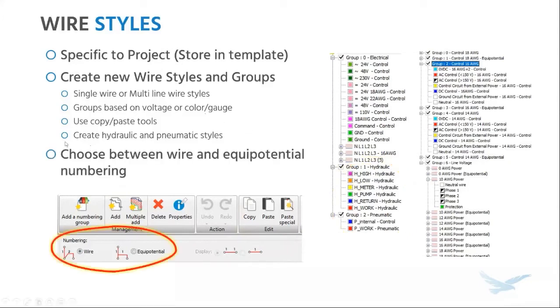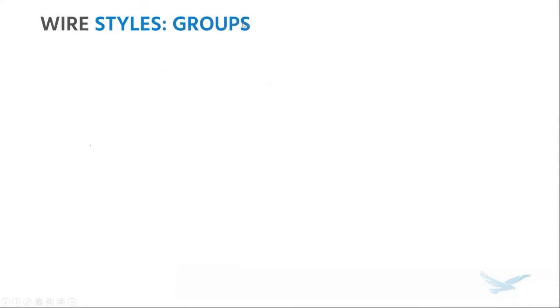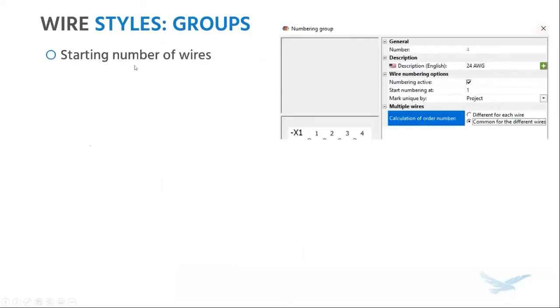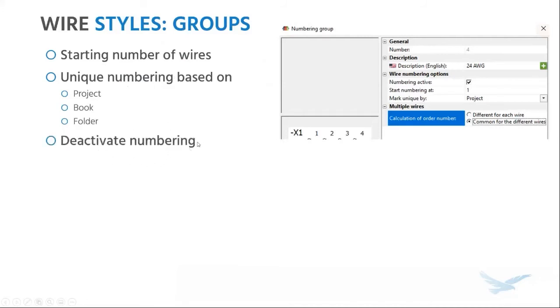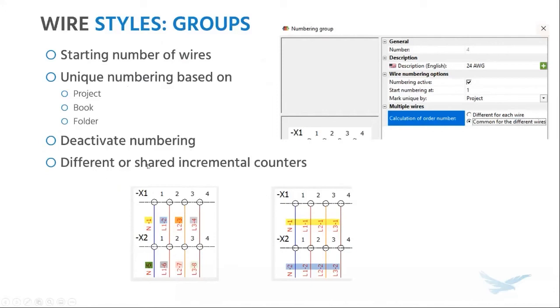You can also choose the scheme of wire numbering that you want — you can either number individual wires or have a number for every voltage potential. I mentioned groups and how you can put wire styles into those groups. Apart from being an organization tool, you can push a range of options across to all the wire styles in that group — for example, the starting number of the wire, whether you want to start numbering at one or 100, whether you want unique wire numbers across the project or the book or the folder, do you even want wire numbers, and whether you'd like different or shared incremental counters across wire styles in that group.